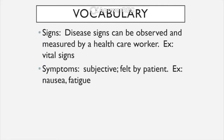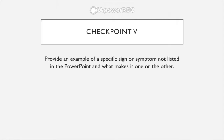Let's do a vocabulary check. We have two distinct things that sound similar but are quite different: signs and symptoms. Disease signs are things that are measurable and observable by a healthcare worker, such as vital signs. Symptoms are subjective — how a patient says they feel — for example, nausea or fatigue. For checkpoint 5, provide an example of a specific sign or symptom not listed in the PowerPoint and explain what makes it one or the other.